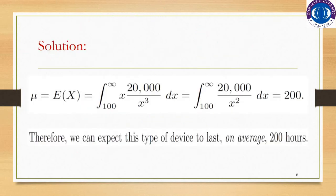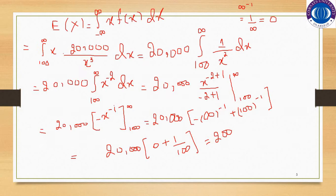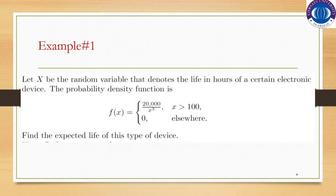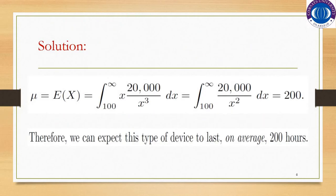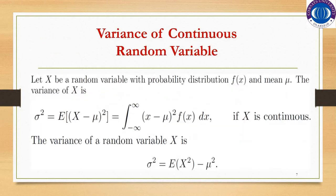Therefore, we can expect this type of device to last on average 200 hours. Since x is the random variable indicating the life in hours of a certain electronic device, finding the expected value of x means finding mu, which is the average life of this particular device — 200 hours.